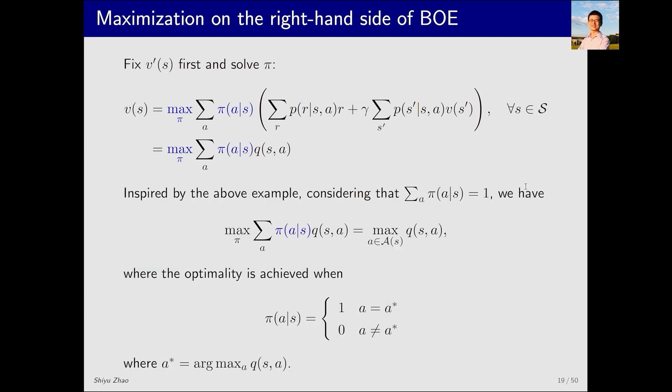From the example above we now see how to solve the optimal π when the value of Q on the right hand side is fixed. The ultimate result is that the optimal value on the left equals the largest of the Q value. The selection of π should be such that for a* it equals 1 and for actions not a* it is 0. Here a* corresponds to the action associated with the highest Q value. Through this introduction we have clearly demonstrated how to handle the potentially confusing optimization problem on the right.